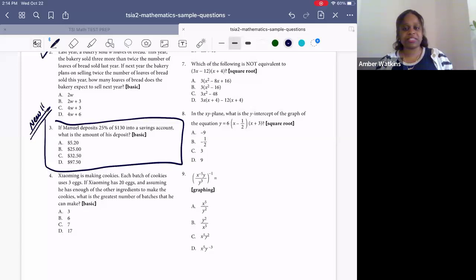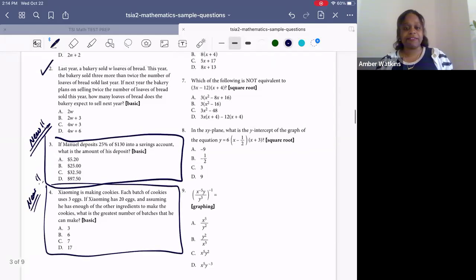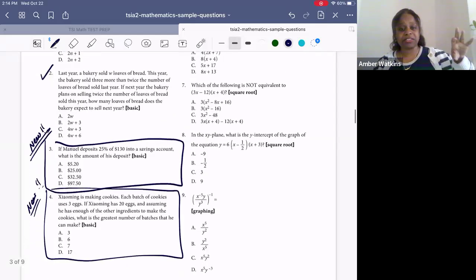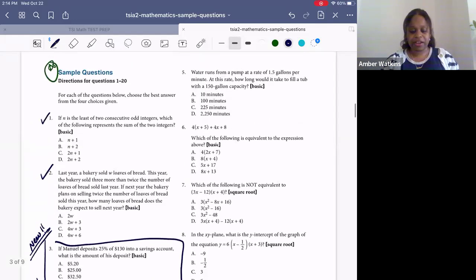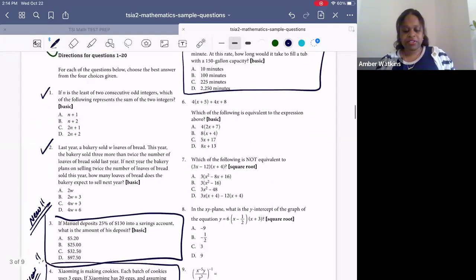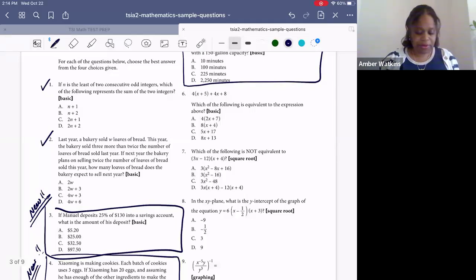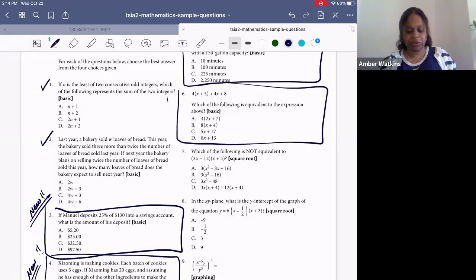Number three, finding the percentages of a total, this is a new question. Number four is a brand new question, also new. If you've already been studying, practice number three and number four. Number five is also a new question. Study number five. Six, I think this is a new one, so I'm going to write new and I'll double check at the end.